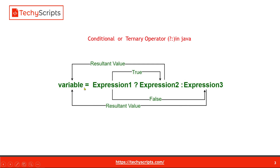We have our variable, and we will have three expressions: expression one, expression two, and expression three. Between expression one and expression two there is a question mark sign, and between expression two and expression three there is a colon. This is the structure of the ternary operator. If expression one is true, the resultant value for the variable will be expression two. If expression one is false, the resultant value will be expression three.